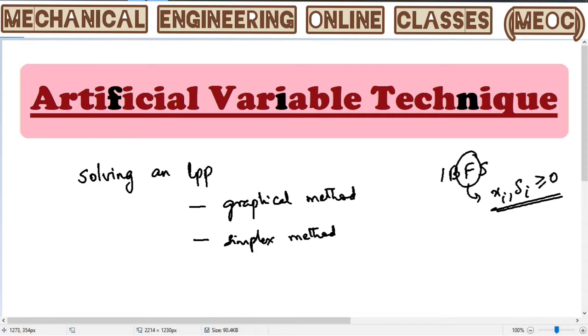Now, in some cases, say for example, there is a surplus variable. When, say for example, the constraint is a greater than or equal to type. Now, suppose a constraint is like this. When we are writing the standard form, we will have to write this as minus some S1 is equal to 3.